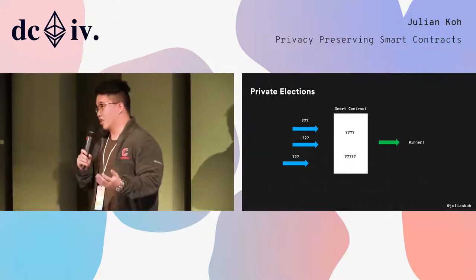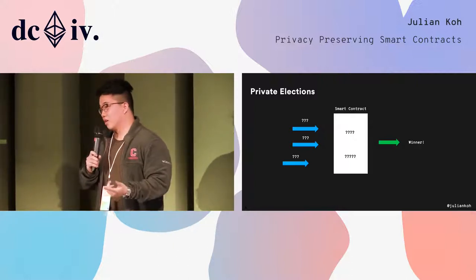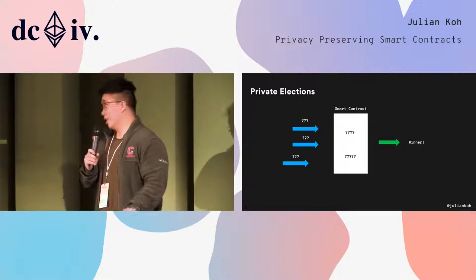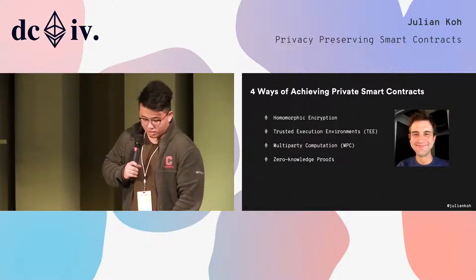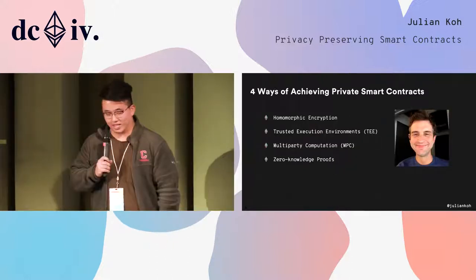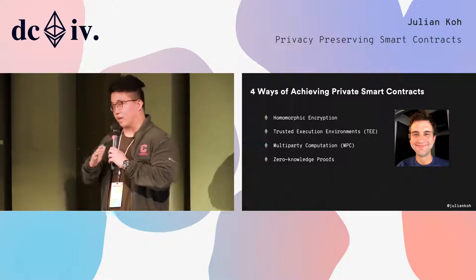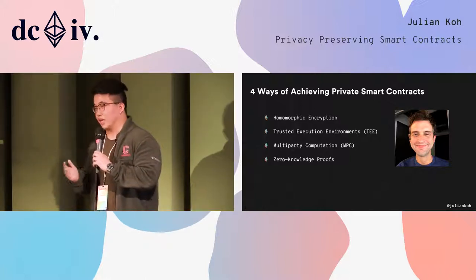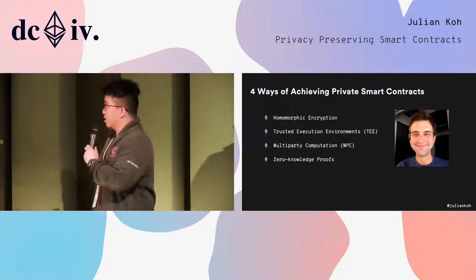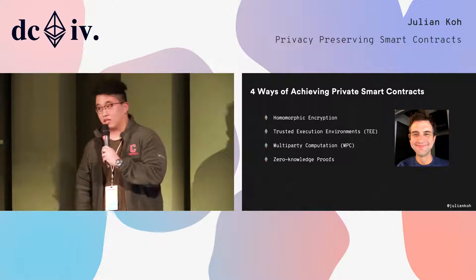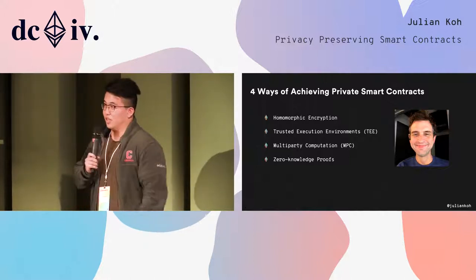What we want is everything hidden — all the inputs are hidden, the state of the smart contract is hidden, and we can only see the actual result. There are four ways of doing this. The first is homomorphic encryption, which is sort of a pipe dream and really slow today, so not feasible right now. The three I'll cover today are trusted execution environments, multi-party computation, and zero-knowledge proofs.